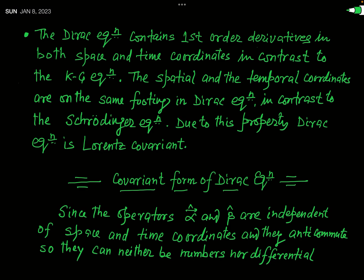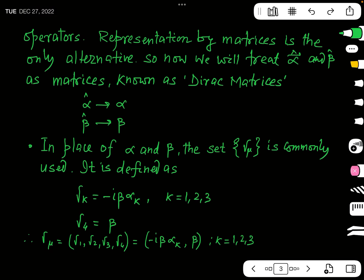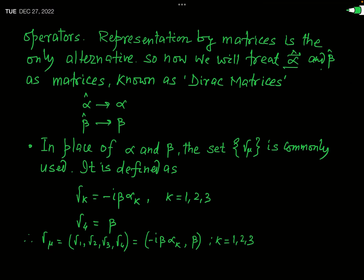Since the operators alpha-hat and beta are independent of space and time coordinates and also anti-commute, they can be neither numbers nor differential operators. Therefore, the matrix representation is the only alternative way to represent these operators. We will treat alpha-hat and beta as matrices, and these are called Dirac matrices.